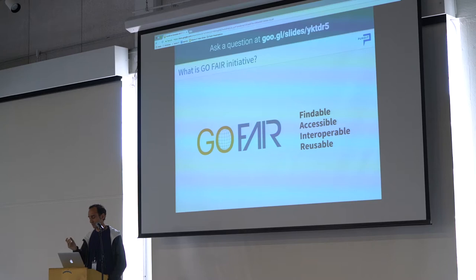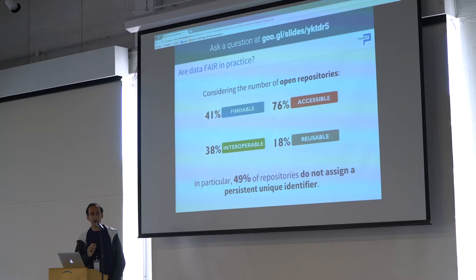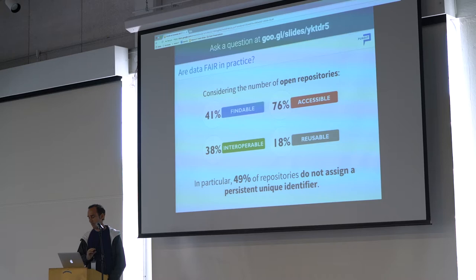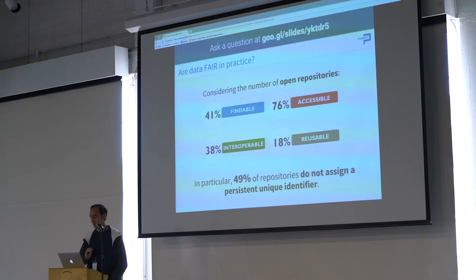Despite these principles, practice is currently far from theory. Metrics show how open repositories are actually compliant with FAIR principles. In particular, 49% of repositories don't assign a persistent unique identifier, so compliance is not that high at the moment.